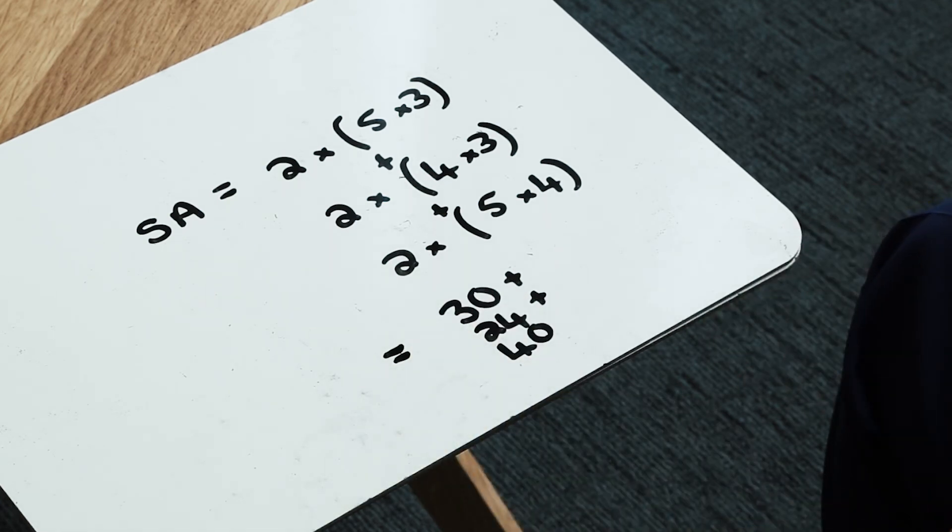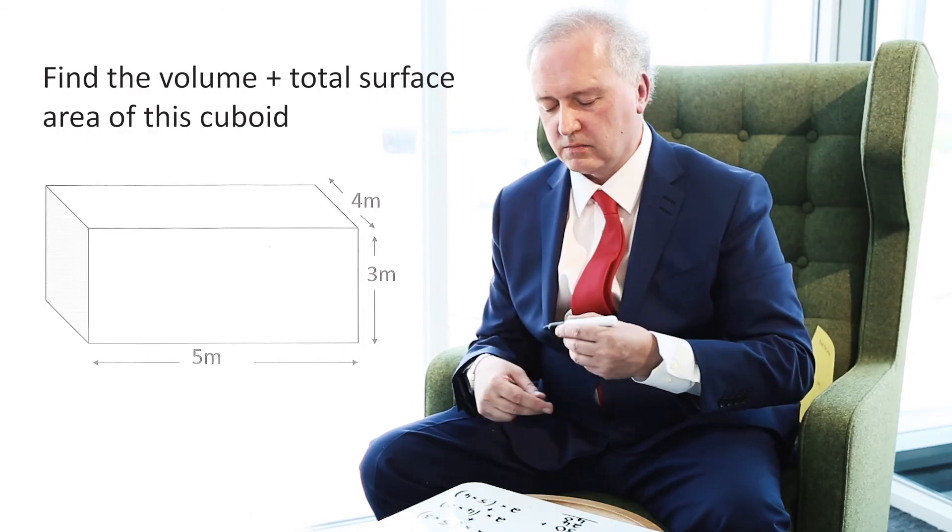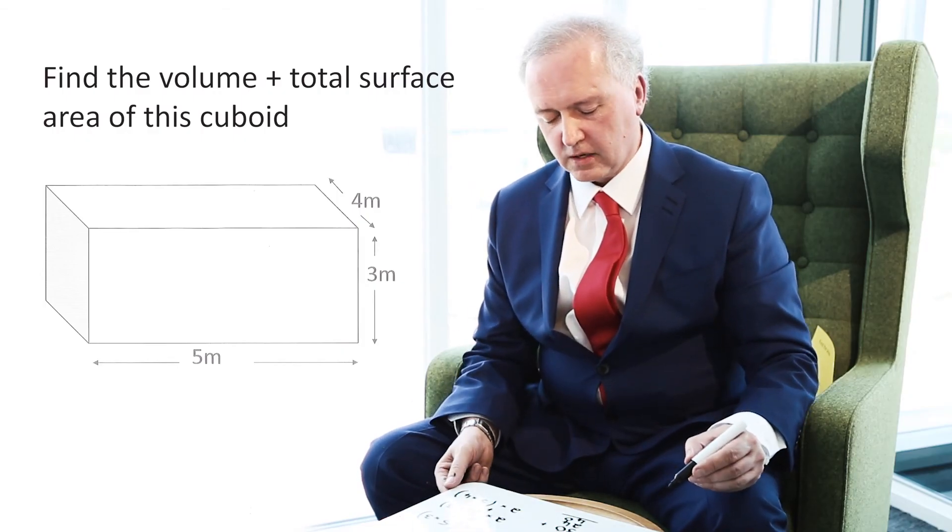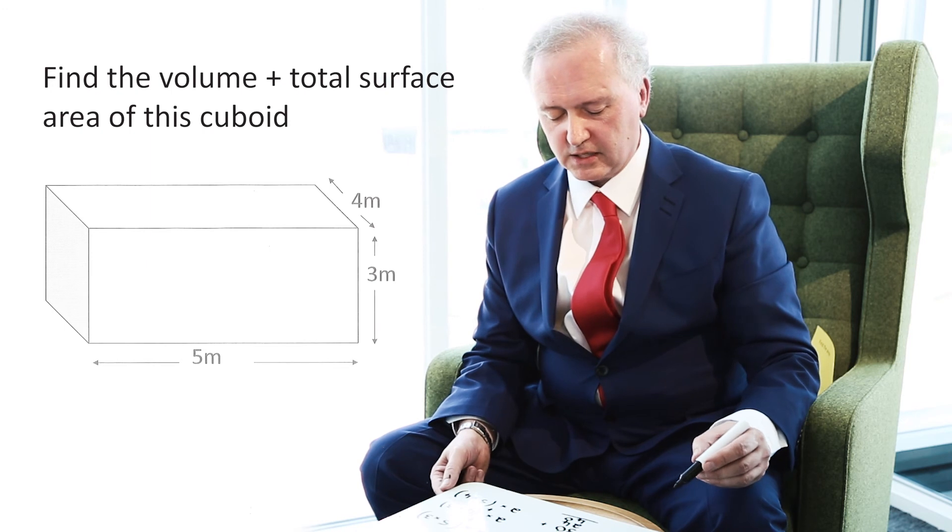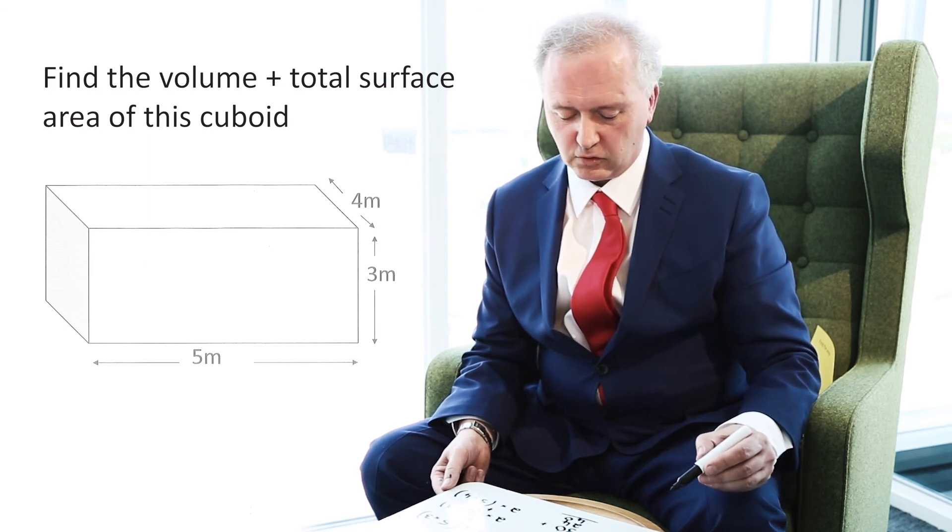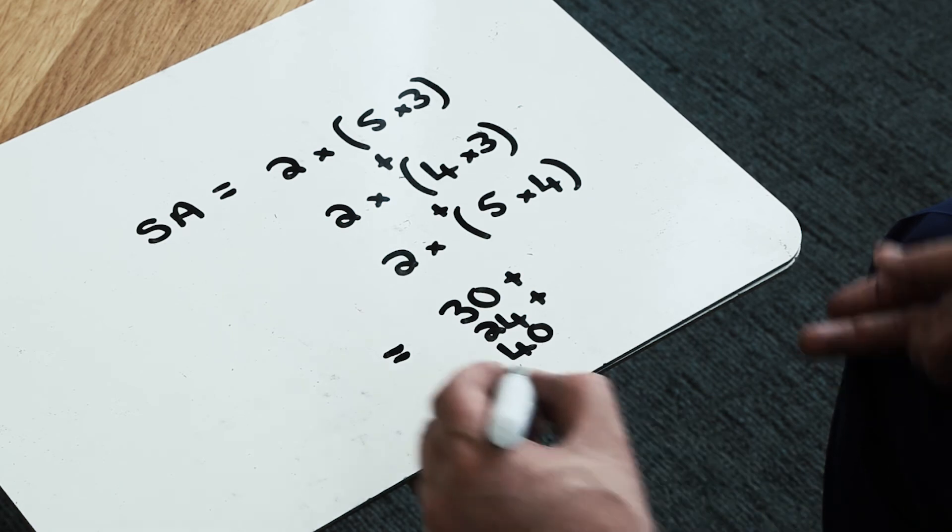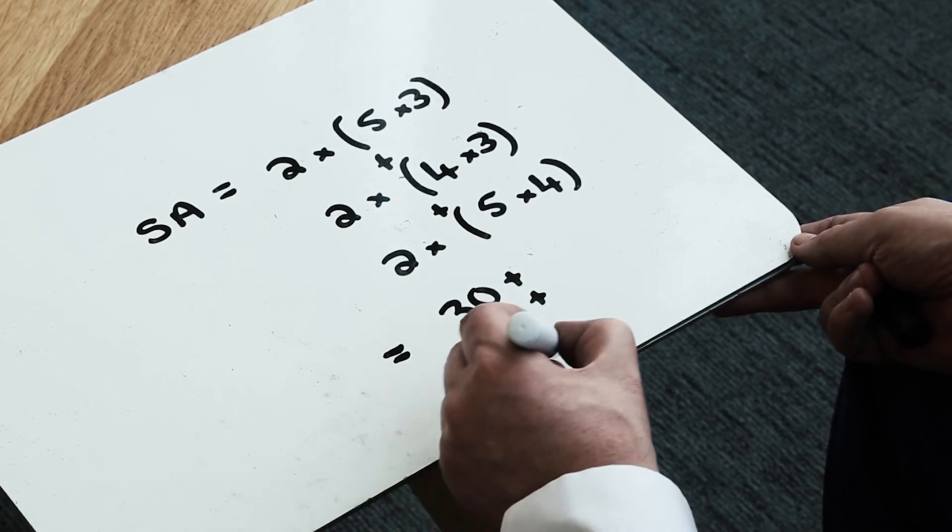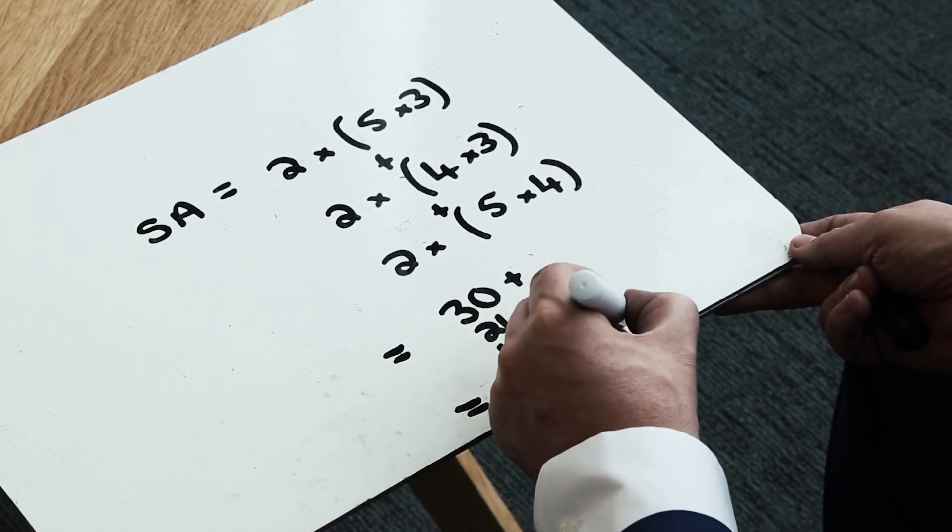So I'm almost there. So to work out the total surface area, I do my three different scenarios there. And I end up having to work out 30 plus 24 plus 40 gives me a total surface area of 94 meters squared.